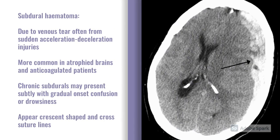The next example is a subdural hematoma — subdural referring to below the dura mater, but above the arachnoid mater in that very thin subdural space. These are venous bleeds, often related to sudden acceleration and deceleration injuries, for example in a road traffic collision. In clinical practice we need to be suspicious of a chronic subdural, which may present more subtly with personality changes, gradual onset confusion, and drowsiness. We should be particularly worried in patients who are anticoagulated and those with atrophied brains, as there's more space for them to bleed into. Radiologically, subdurals appear as more of a crescent shape and because they're below the dura, these can cross the suture lines.